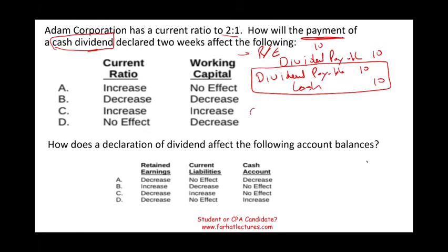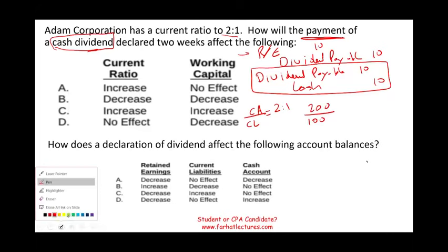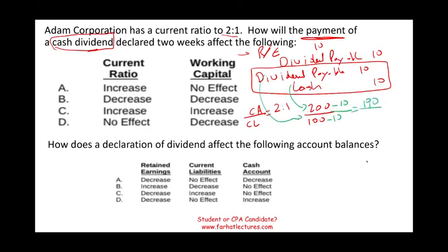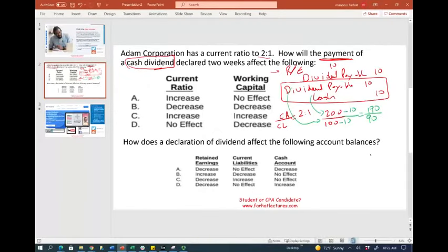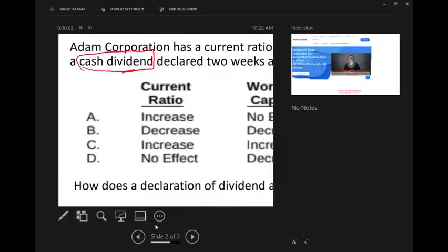Now, what they're telling you is: you have current assets divided by current liabilities, and your current ratio is two to one. Simply put, you have 200 in assets and 100 in liabilities. Now you made a payment of $10. What is that going to do? Your current assets, because you paid in cash, will go down by $10, and your current liabilities — dividend payable — will go down by $10. Now your figures are 190 to 90. Let's compute 190 divided by 90.